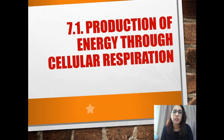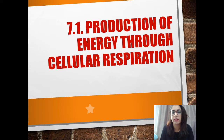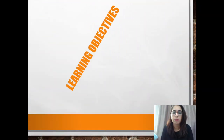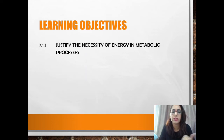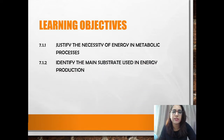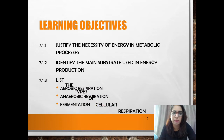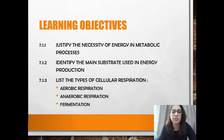So today we are going to learn on 7.1, Production of Energy through Cellular Respiration. You can refer to your textbook on this. So what are the learning objectives? You are going to learn: first, you must be able to justify the necessity of energy in metabolic processes; identify the main substrate used in energy production; and list the types of cellular respiration — aerobic respiration, anaerobic respiration, and also fermentation.